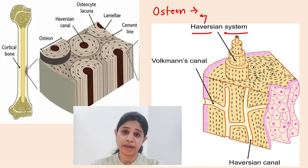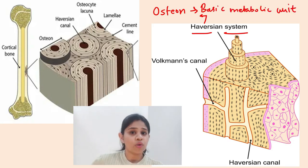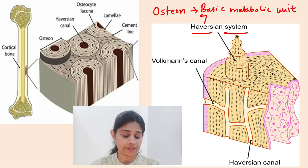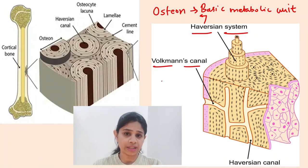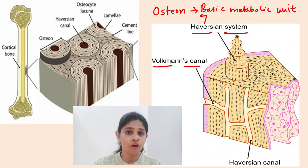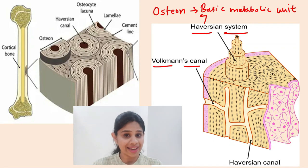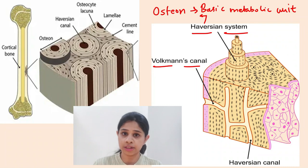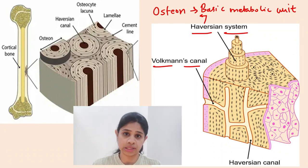The osteon is the basic metabolic unit of bone. Another important type of canal is termed Volkmann's canals. These canals are components which help in the communication of different Haversian systems, or connect a Haversian system to the periosteum or endosteum. Like the Haversian canals, Volkmann's canals also consist of blood vessels and nerve supply, helping to keep the whole bone system vital.